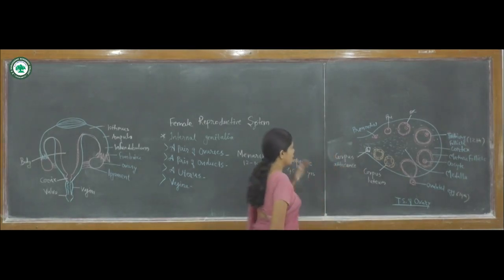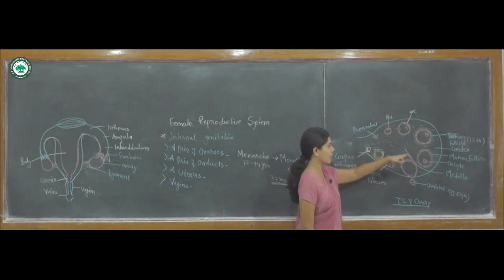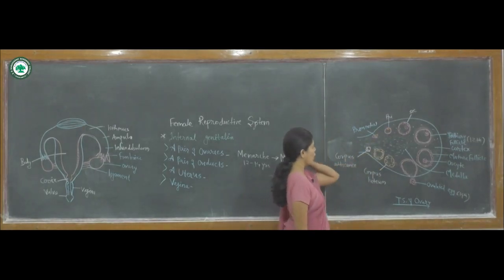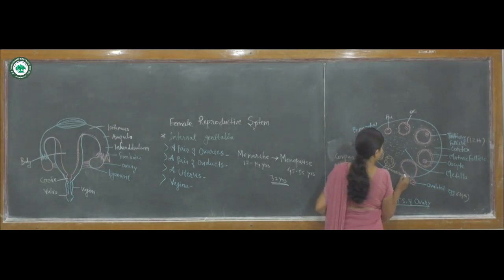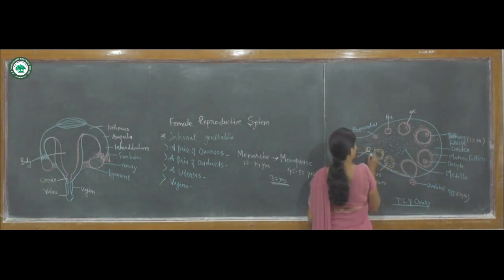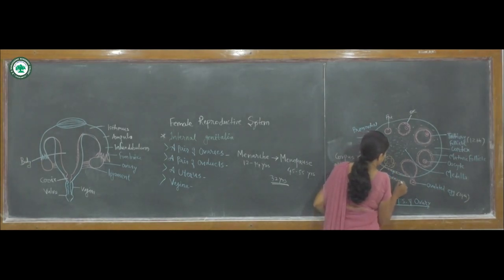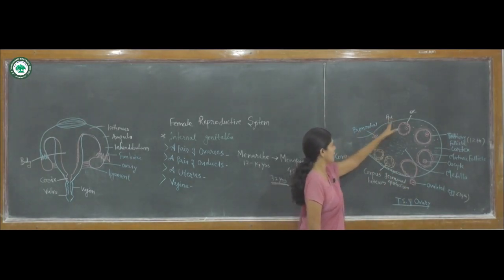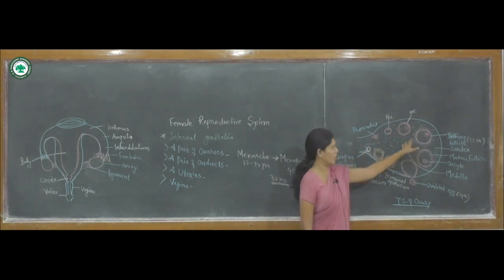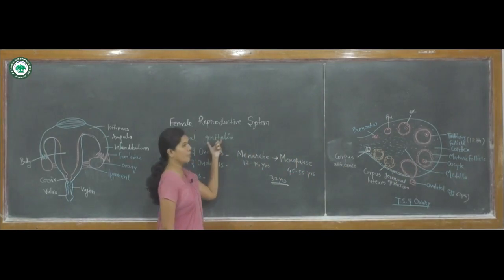The process of formation of the oocyte or egg is carried out from the primordial follicle. The primordial follicles are present in the cortex region of the ovary. There is a layer of the ovary known as the germinal epithelium cell. From the germinal epithelium and primordial follicle, it forms the primary, secondary, tertiary, and lastly the Graafian follicle. This oogenesis process is carried out in the ovary.